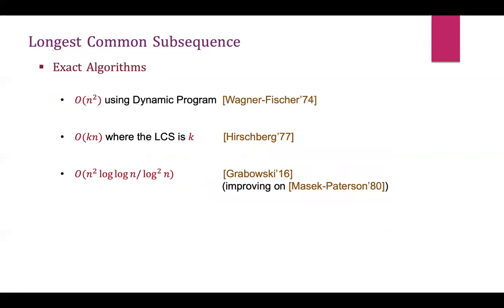There exists a simple textbook algorithm that uses dynamic programming and can compute the exact LCS in quadratic time. Later, another algorithm was developed that depends on the length of the LCS: if the length is k, the running time is kn, which is much smaller than quadratic when k is significantly smaller than n. Further, another algorithm can shave off two log factors regardless of the LCS length.